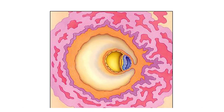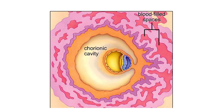Spaces in the maternal tissue around the implanting blastocyst open and fill with blood. Inside the blastocyst, a chorionic cavity opens around the amnion and yolk sac. The membrane that lines this cavity is the chorion. It will become part of the placenta.